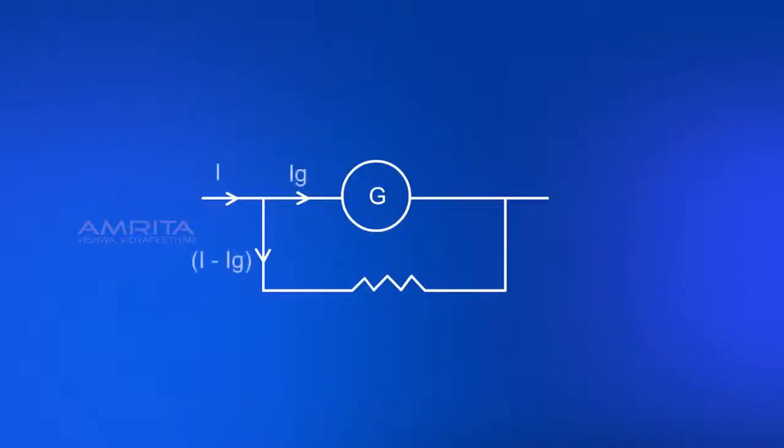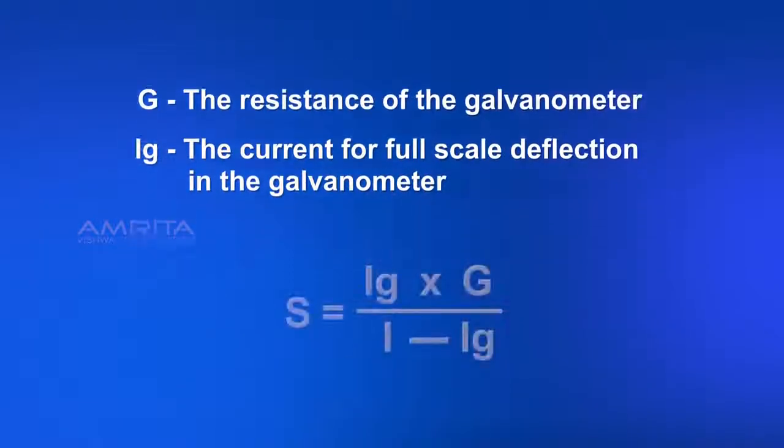The value of the shunt resistance S required to convert the galvanometer into an ammeter to measure a current of I Ampere is: S equals IG times G divided by (I minus IG).